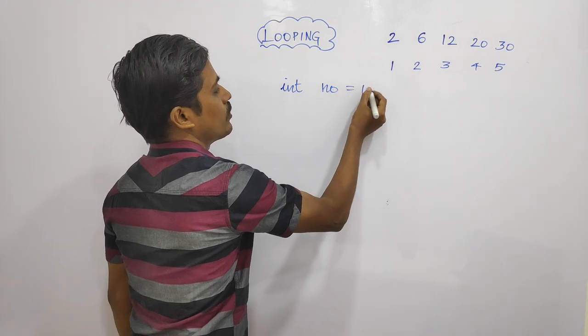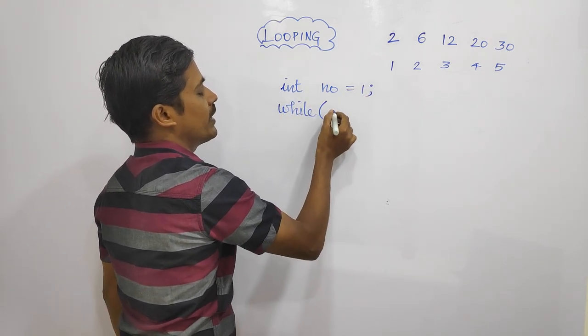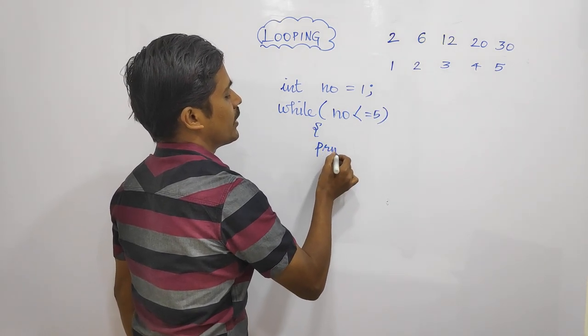Int number equals to 1. If we use this for loop, we will use while loop. While number less than or equal to 5.